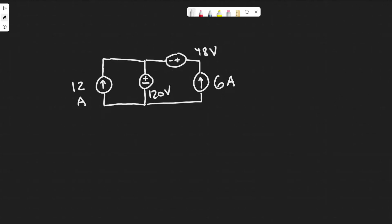In this problem, we're told: is the interconnection in the figure valid if I1 equals 12 amps, I2 equals 6 amps, V1 equals 120 volts, and V2 equals 48 volts? And then part B, we're going to be finding the power developed by the current sources.